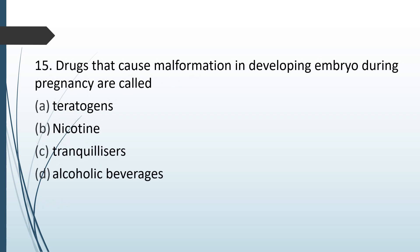Drugs that cause malformation in a developing embryo during pregnancy are called: teratogens, nicotine, tranquilizers, or alcoholic beverages. The correct answer is option A — teratogens.